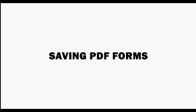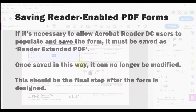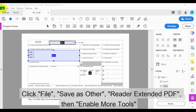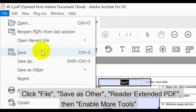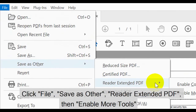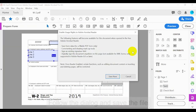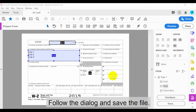Now let's look at how to save PDF forms. If it's necessary to allow Acrobat Reader users to populate and save the form, it must be saved as Reader Extended PDF. Once saved in this way, it can no longer be modified, so this should be the final step after the form is designed. To do it, click File, then Save as Other, then Reader Extended PDF, then Enable More Tools. Follow the dialog to save the file.